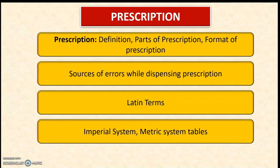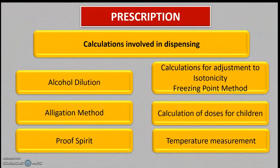Latin terms are important for both theory and practicals. If you don't know the Latin terms, you cannot perform the practicals, because you have to first translate the Latin terms into English. Next are the imperial and metric system tables. The four most important imperial system symbols are drachms, fluidounces, minims, and grains — important for theory as well as practicals.